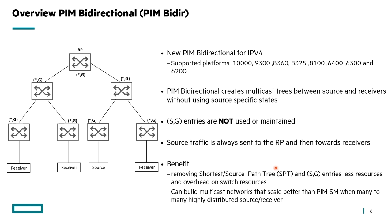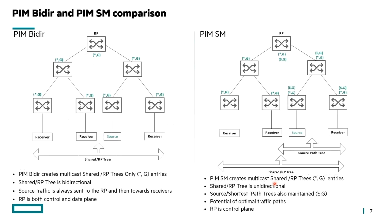More than likely, it's a good advantage to have only star,G entries when you need to scale into large networks where you have highly distributed sources and receivers, which typically can happen in an enterprise. We'll be covering that in more detail, but that's the overview.